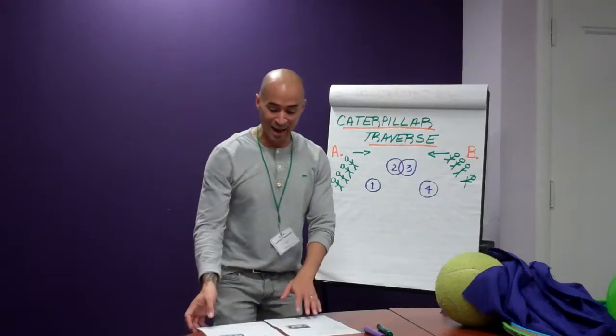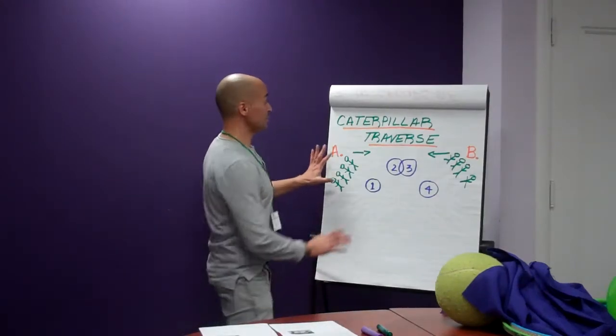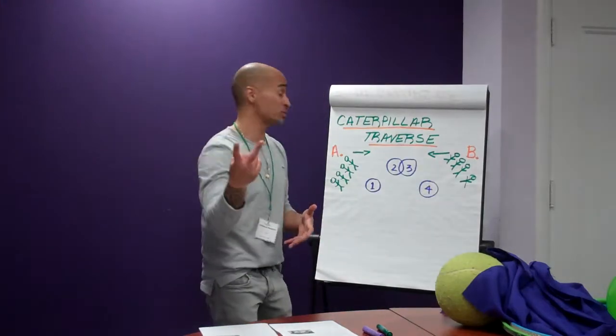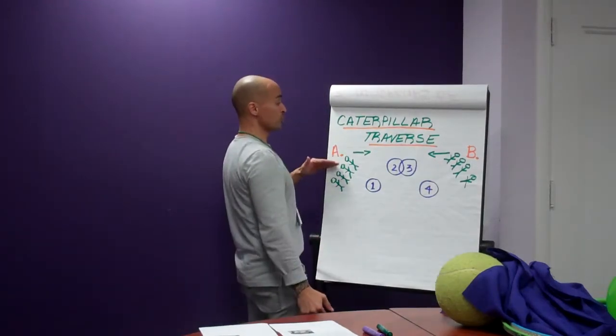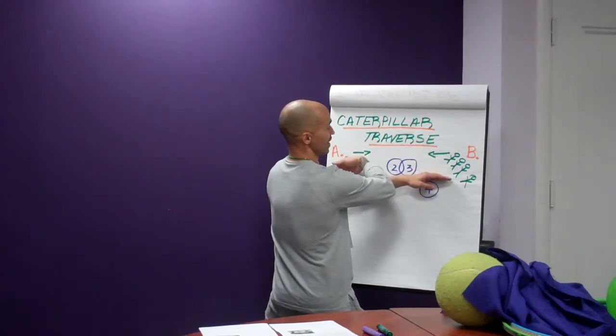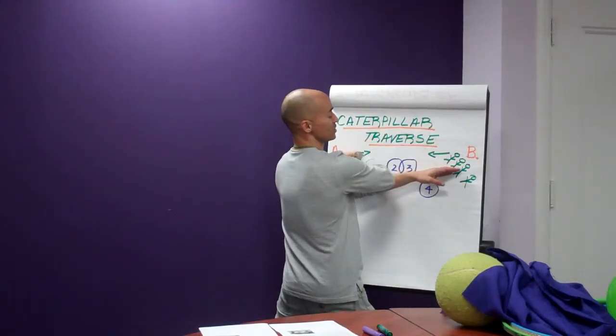Our next one, caterpillar traverse, might be a little more complicated, but it's pretty fun. So in my little diagram here, you're going to have group A and group B. Again, you're splitting the group up into two teams. So what group A and group B are trying to do is they're going to cross. They're going to try to get to each other's other end.